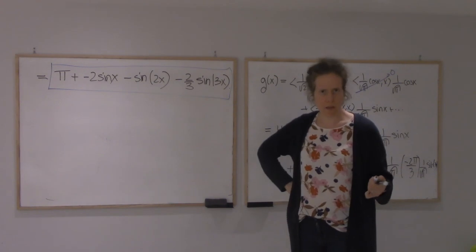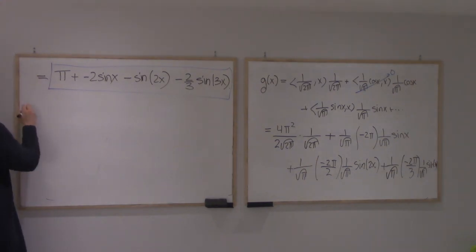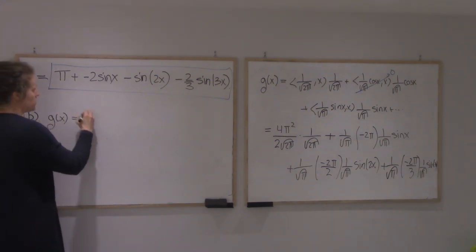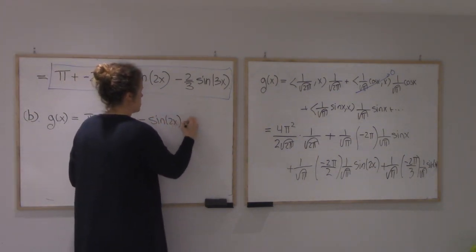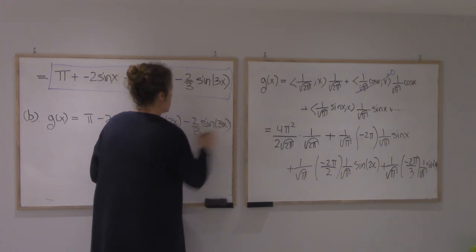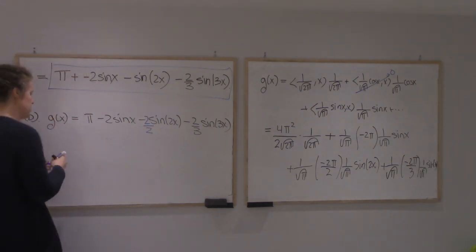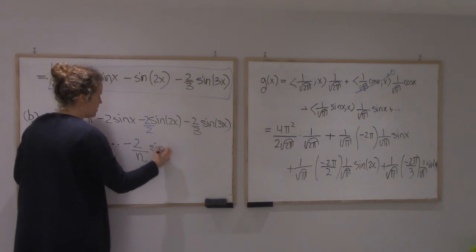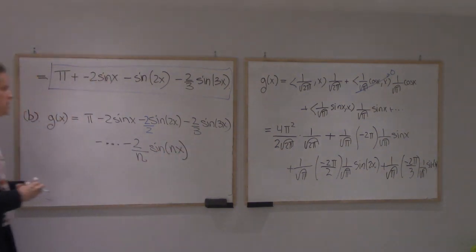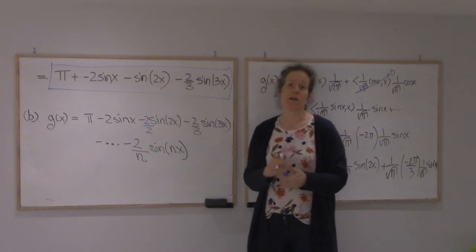We've computed everything for any k, so let's write the general one. That was question B. If I'm allowed to keep going, I'll keep going. And to see the pattern, let me put 2 over 2 here. So I'm going to get minus 2 over n sine of nx. So that will be my best approximation by a trig polynomial of degree n or less.